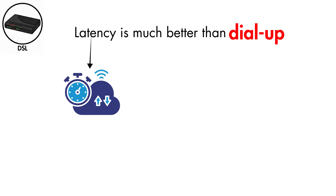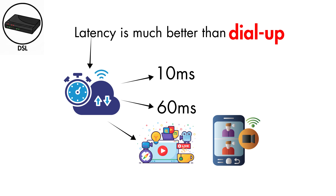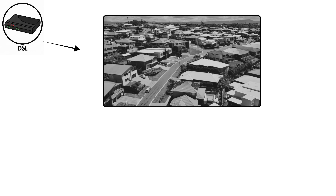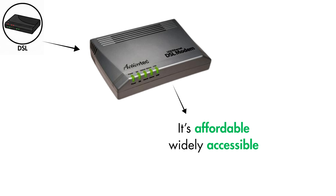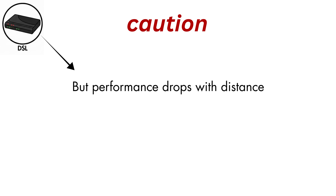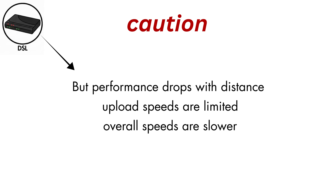Latency is much better than dial-up, usually between 10 and 60 milliseconds, making activities like streaming, video calls, and gaming possible. DSL is best for small households or areas where cable isn't available but phone lines are. It's affordable, widely accessible, and offers consistent speeds because the line isn't shared with neighbors. But performance drops with distance, upload speeds are limited, and overall speeds are slower compared to cable and fiber.